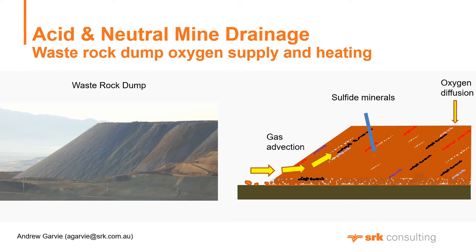The intrinsic permeability is the dump material property that controls rates of advection. It therefore affects rates of acid and sulphate generation and heating within the waste rock dump.